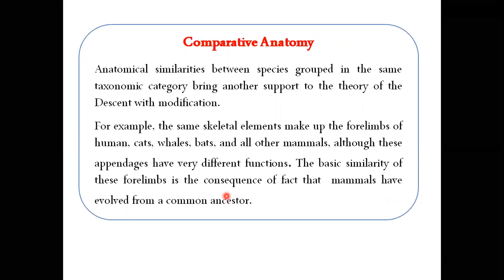Another evidence comes from comparative anatomy. An important point from the examination perspective: anatomical similarities between species grouped in the same taxonomic category. In anatomy, we place species into one group — one taxonomic category — on the basis of similarity. This is also evidence in support of the theory of evolution, i.e., the theory of descent with modification.